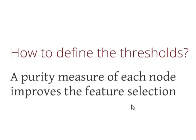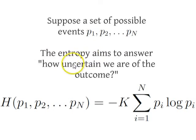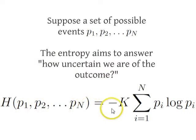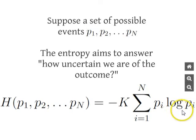Let's show how this works. Suppose we have a set of events — p1, p2 until pn. We have a measure called entropy that aims to answer how uncertain we are of the outcome. The entropy is calculated using this equation: the entropy of a set of events is the sum of each event probability times the log of the same probability.